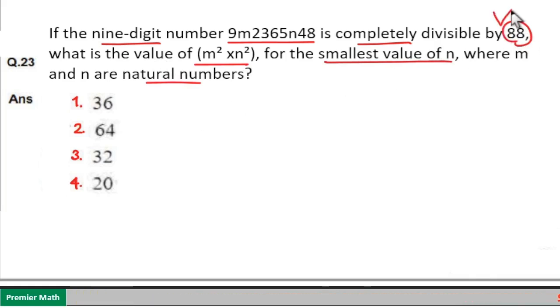Here, when a number is divisible by 88, it should be divisible by both 11 and 8. When a number is divisible by 8, its last 3 digits should be divisible by 8.